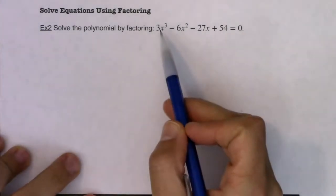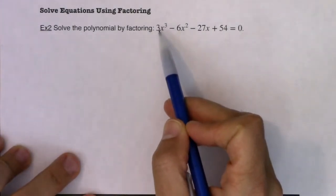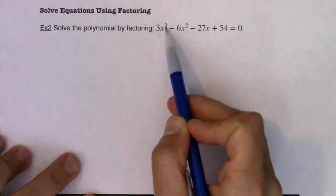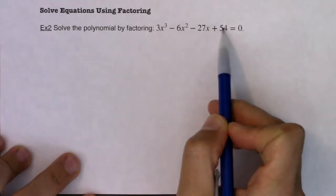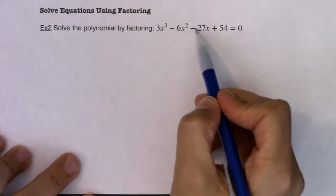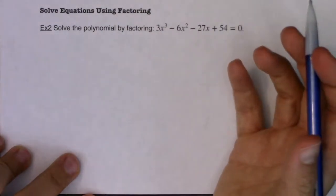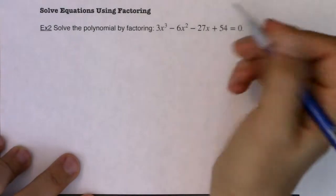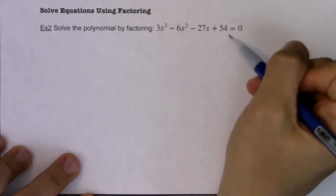When you have a polynomial - polynomial again means many terms - I technically have a cubic polynomial but I have four terms here. When you have four terms specifically there's a technique that presents itself called factoring by grouping and you can group these in any order.